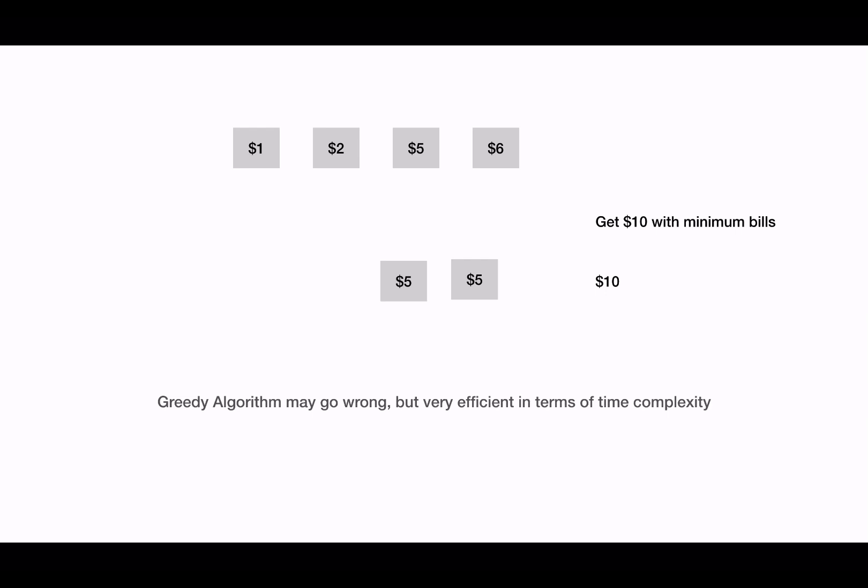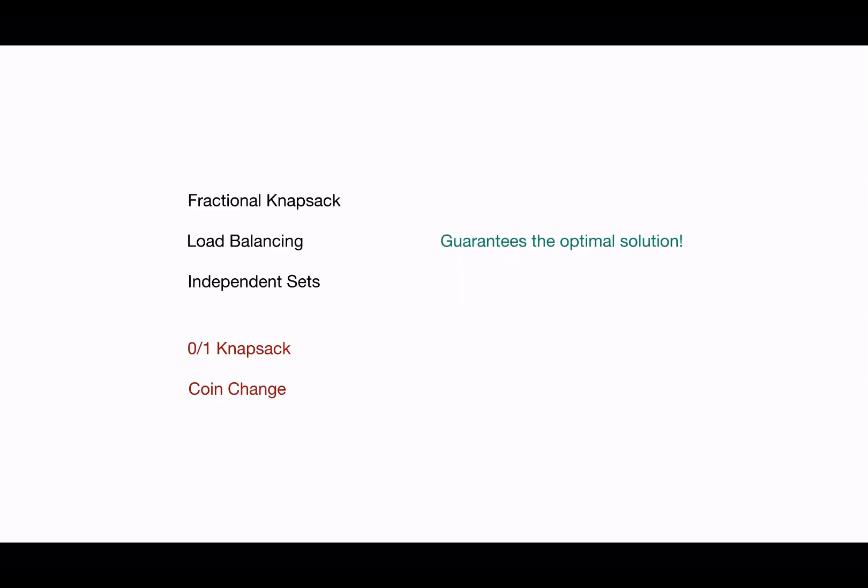Now you can understand how greedy can go wrong, but it can be very fast in terms of time complexity. Extending the discussion further, if we apply greedy, some problems — for example fractional knapsack and load balancing — guarantee the optimal solution. But some problems fail to guarantee the optimal solution, such as zero-one knapsack and the coin change problem.